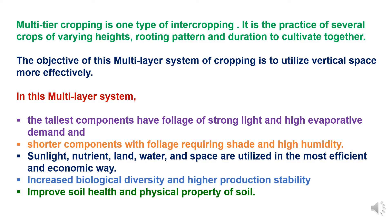In the multi-layer system, the tallest components have foliage with strong light and high evaporative demand. The shorter components have foliage which requires shade and high humidity. Natural resources like sunlight, nutrients, land, water and space are utilized in the most efficient and economic way by the arrangement of crops.